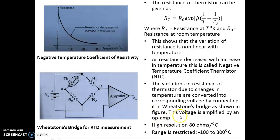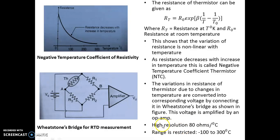Thermistor has very high resolution — in contrast with PRT, for each degree Celsius change in temperature the resistance of a thermistor varies by 80 ohms, which is very high compared to only 7 ohms for PRT. However, the temperature range is restricted for thermistor — it is from minus 100 degree Celsius to 300 degree Celsius, which is a limitation of thermistor.